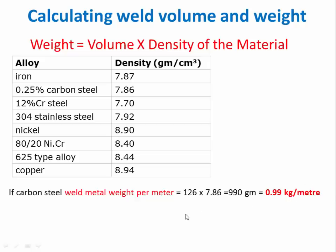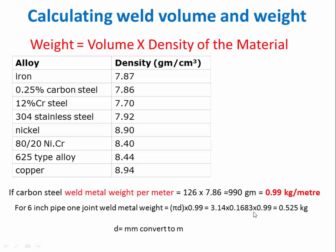Our example is 6-inch pipe. So for 6-inch pipe, one joint weld metal, the overall length we will calculate. 0.99 × 3.14 × 0.168 (we have to enter D in meters). So for 6-inch one joint, 0.525 kilogram per meter weight.